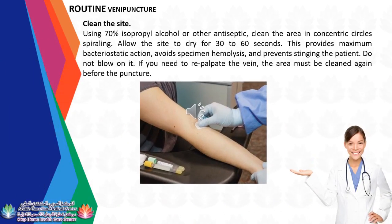Clean the site using 70% isopropyl alcohol or other antiseptics; clean the area in concentric circles spiraling outward. Allow the site to dry for 30 to 60 seconds — this provides maximum bacteriostatic action, avoids specimen hemolysis, and prevents stinging the patient. Do not blow on it. If you need to repalpate the vein, the area must be cleaned again before the puncture.